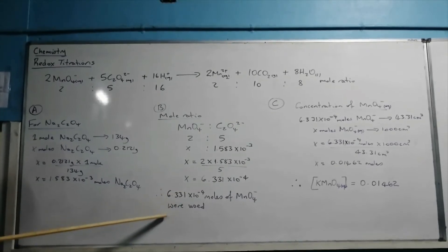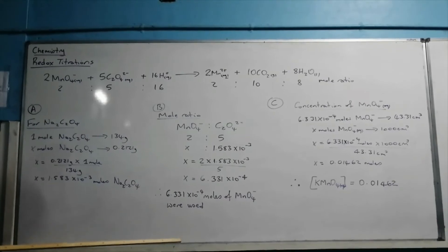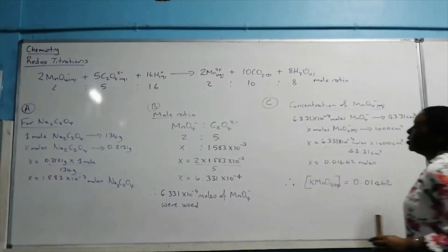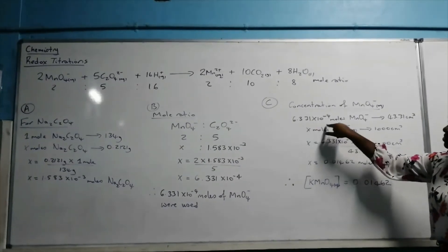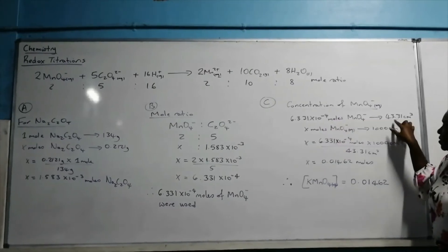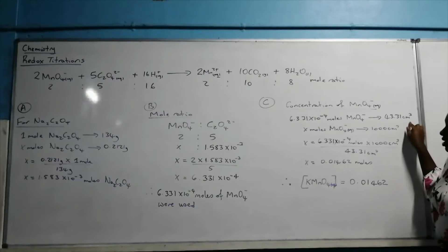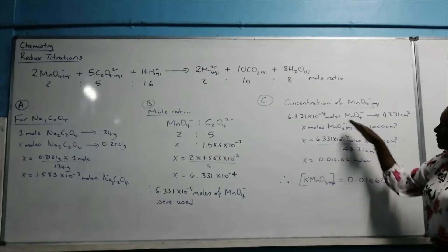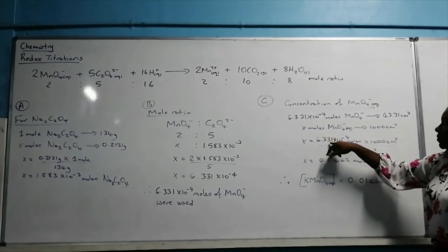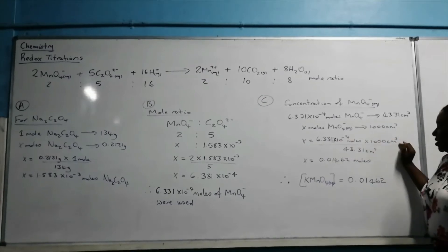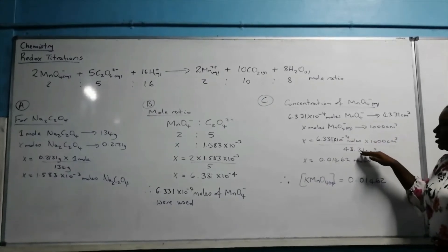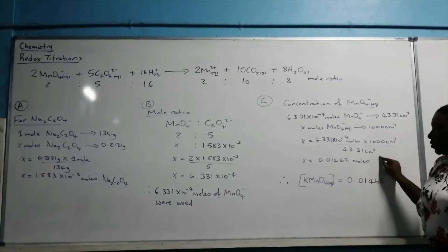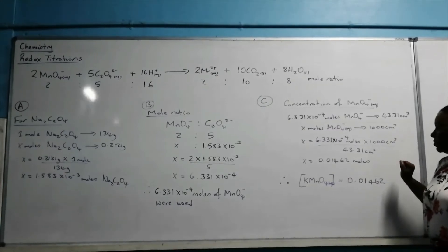So this number of moles of potassium permanganate were used in this titration. Moving to the next side of the board: we have 6.331 × 10⁻⁴ moles of permanganate ions present in 43.31 cm³ of solution. To find how many moles would be present in 1000 cm³, which gives the molarity, we cross multiply: 6.331 × 10⁻⁴ × 1000 ÷ 43.31, giving us 0.01462 moles per dm³.